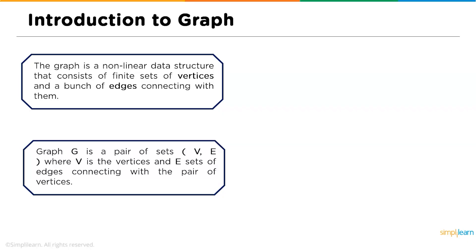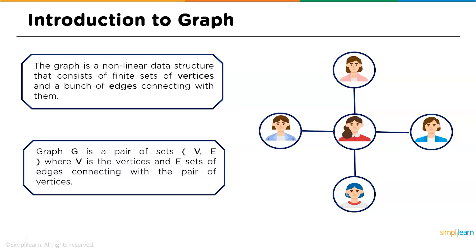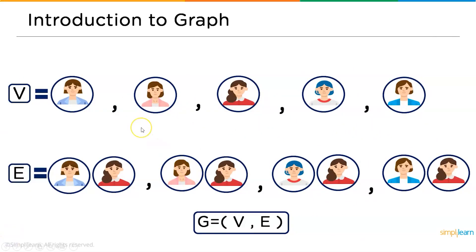A graph is usually represented by a set of vertices and edges. A vertex is the node present in a graph. Imagine you are a group of five friends — each one of you is considered a vertex, and the network connecting you is known as an edge. The overall graph is represented by vertices and edges, where the vertices are the people and the edges are the connections between them.